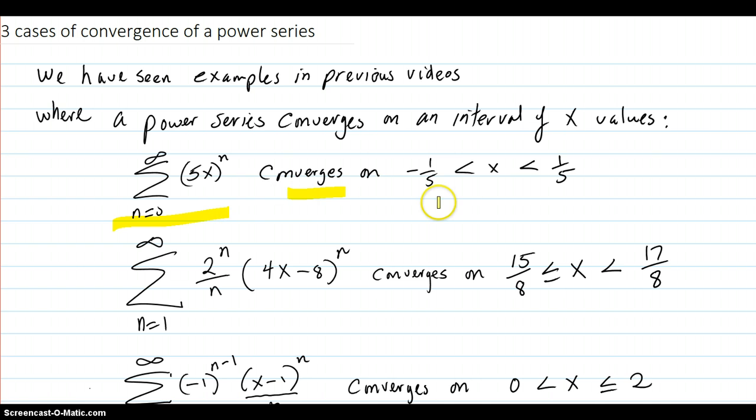This one converged on this open interval. This one converged on this interval where you got 15 eighths, it converged there, but did not converge on the right endpoint.